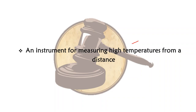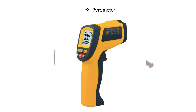An instrument for measuring high temperatures from a distance. So you are at a distance from something burning or something with a high temperature and you measure it through this device. What is that instrument called? It's called a pyrometer. You aim it at the source of heat and get the reading on the display.